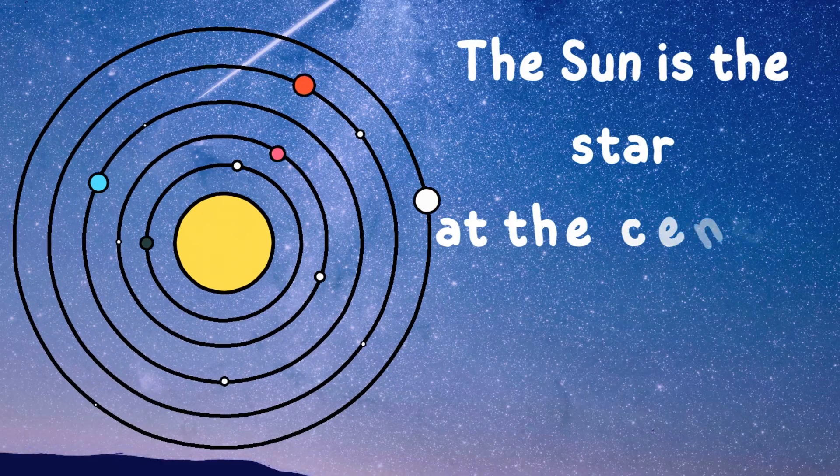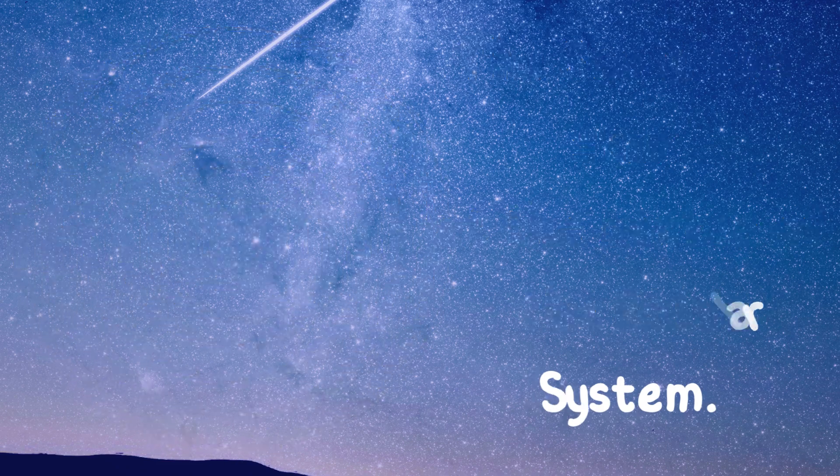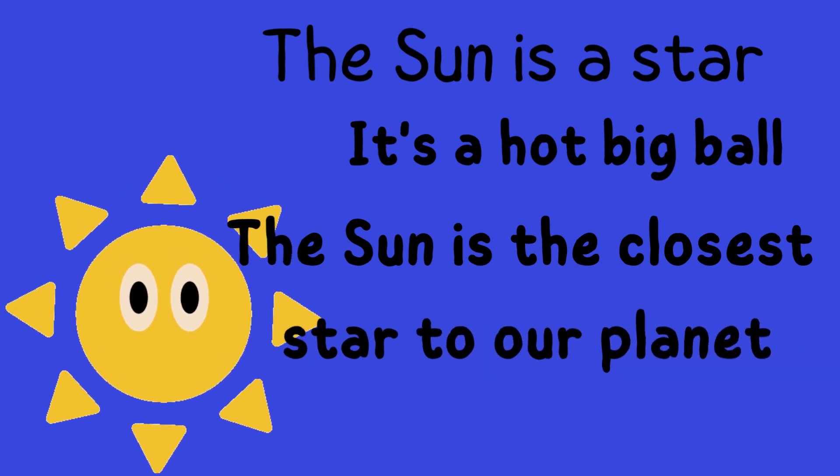The sun is the star at the center of the solar system, and all the planets orbit it. The sun is a star. It's a hot big ball. The sun is the closest star to our planet.